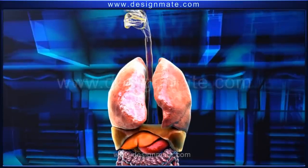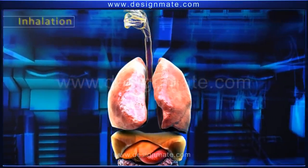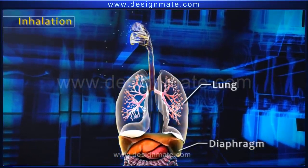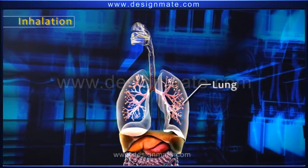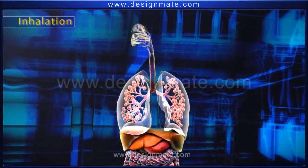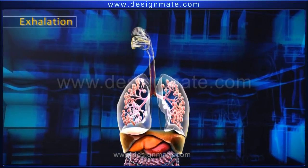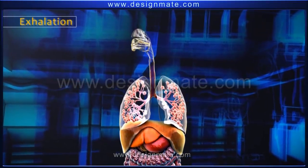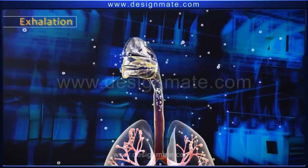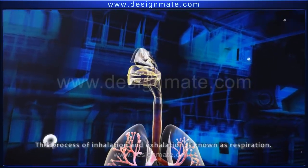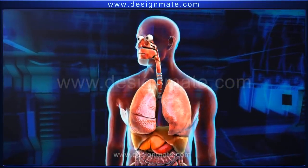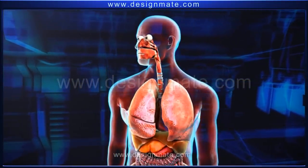The process of breathing in air rich in oxygen is called inhalation. After the contraction of the muscular diaphragm, the lungs expand and air rushes in, resulting in the inflation of the alveoli. During exhalation, the diaphragm moves up and the lungs contract, causing the alveoli to deflate and forcing air out. This exhaled air is rich in carbon dioxide. This process of inhalation and exhalation, known as respiration, occurs approximately 20 times per minute.